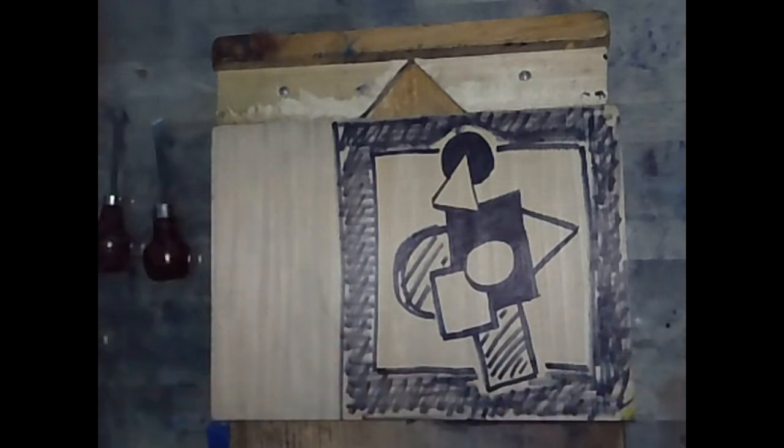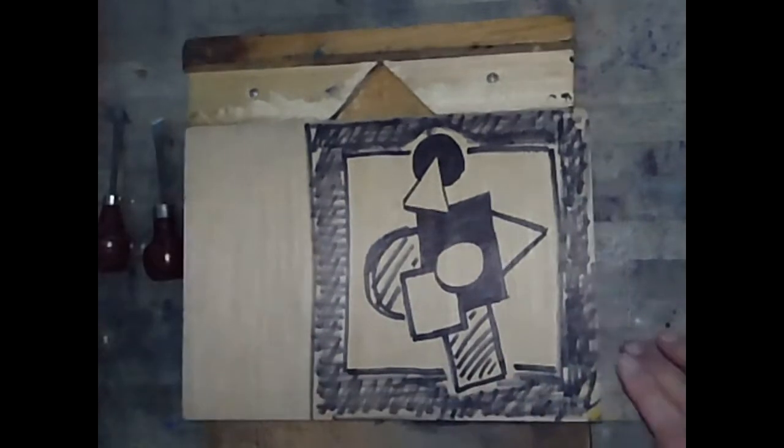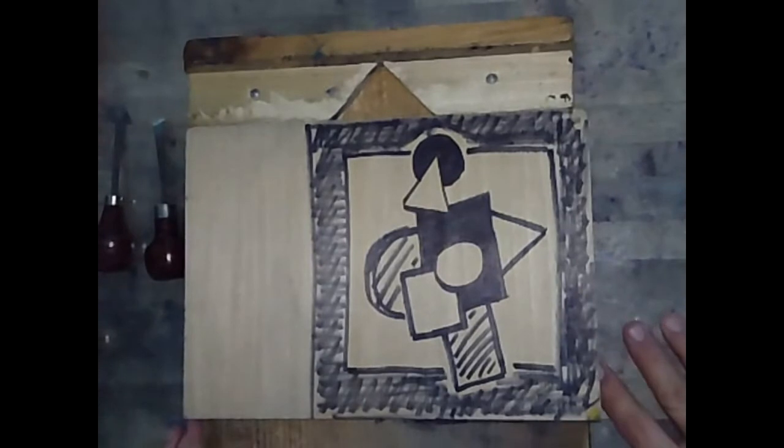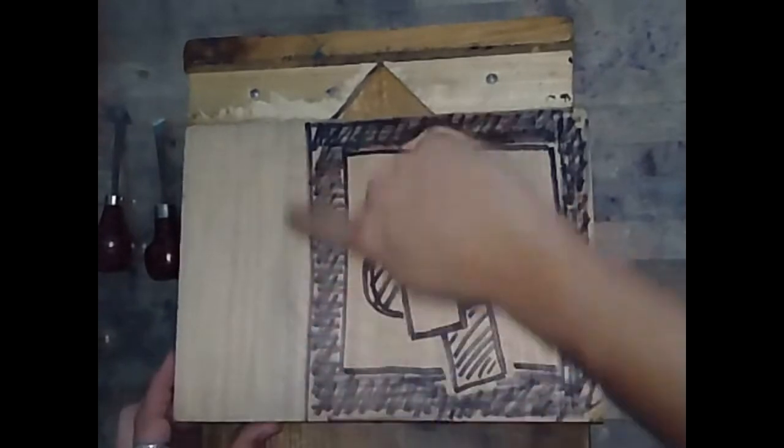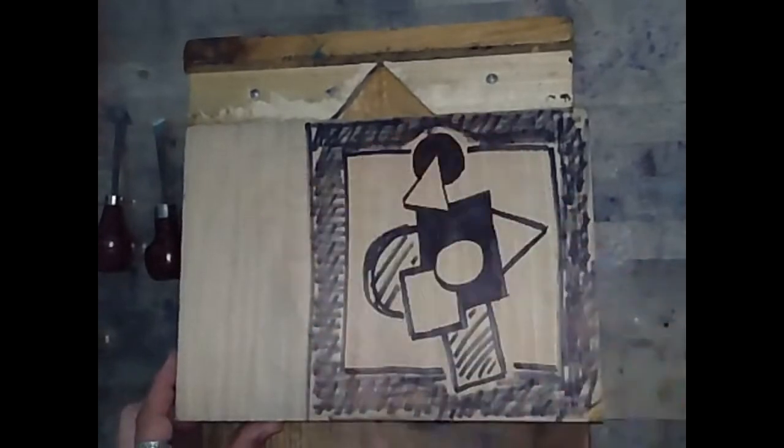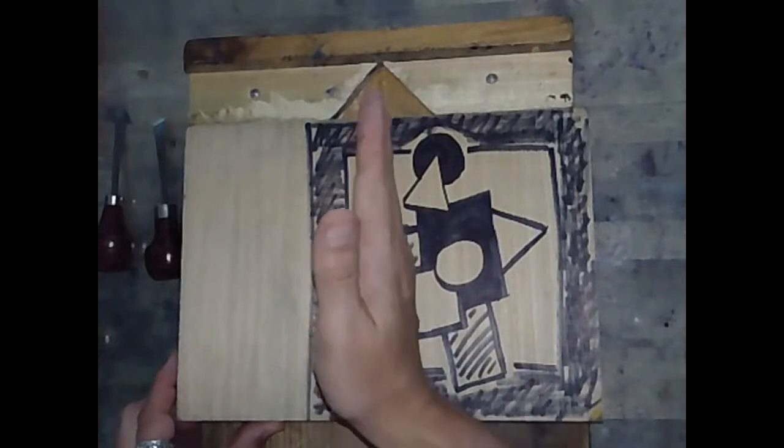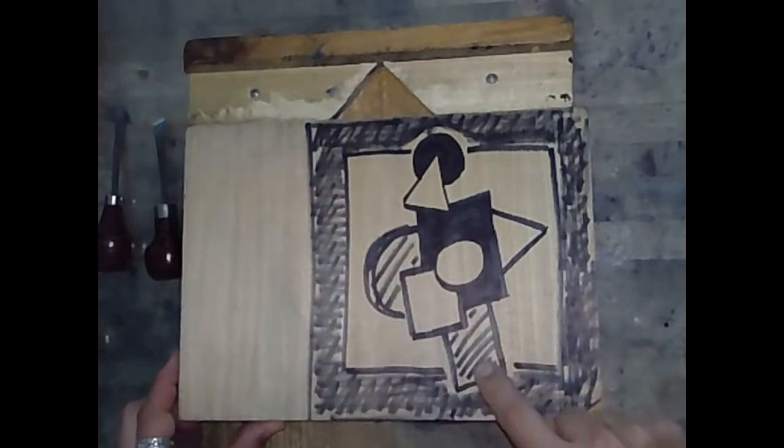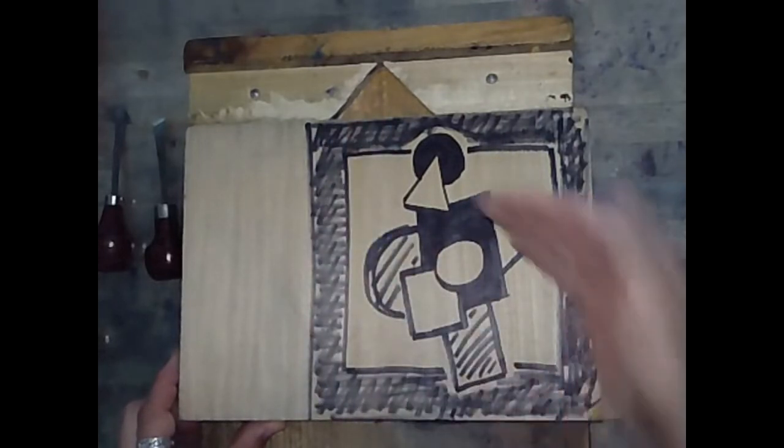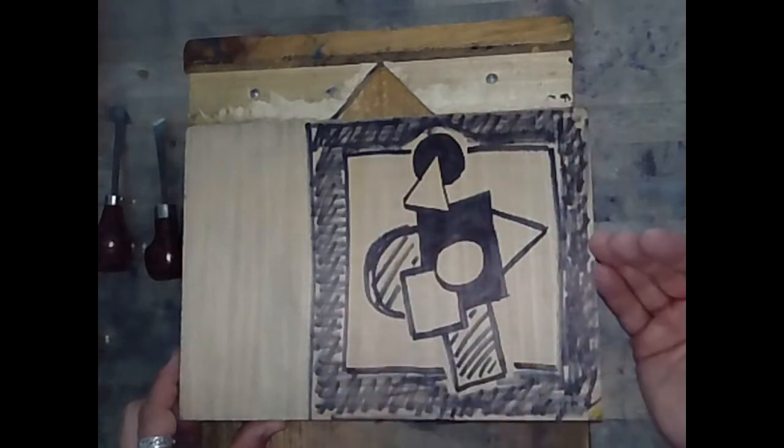What I normally recommend is, wherever possible, to try to cut with the grain. So in this example, the grain is running this way. So as much as possible, I want to cut in that direction. Obviously, based on my design, there are going to be some areas where I'm going to have to cut against the grain or in different directions.